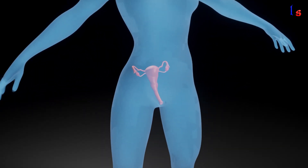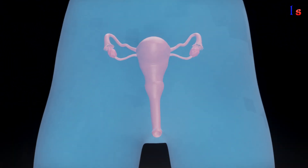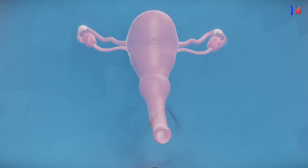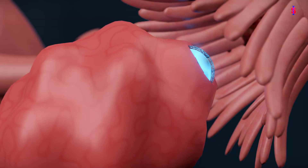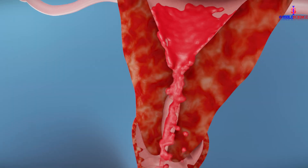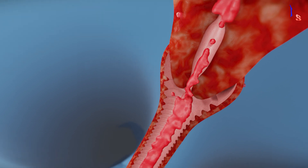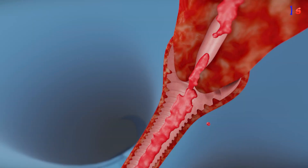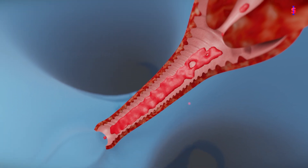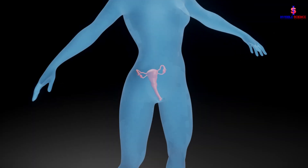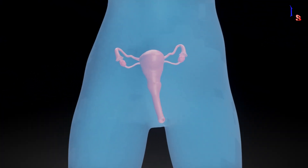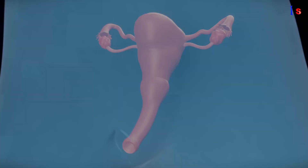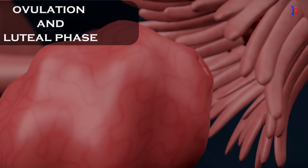Hello friends, today we have an exciting topic to discuss. We will be exploring the full process of ovulation and the menstrual cycle using 3D visuals. The menstrual cycle is the complex process that occurs in the female reproductive system. It typically lasts about 28 days and consists of several phases: menstruation, the follicular phase, ovulation, and the luteal phase.